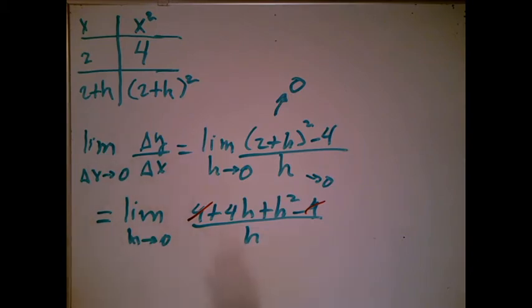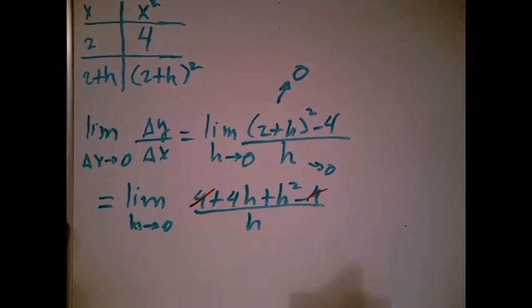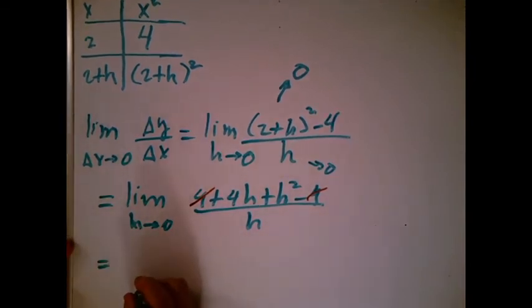I usually let people just start canceling h's, but let's do it with all the work at least once. So I'm going to write down equals, haven't taken the limit yet, so I have to write down limit, h goes to 0.